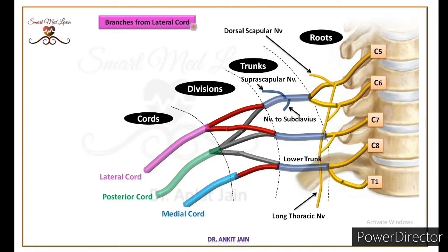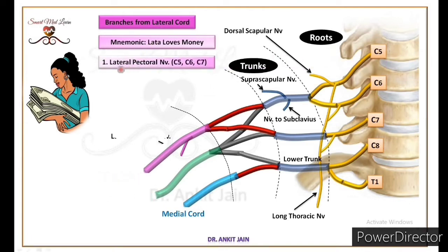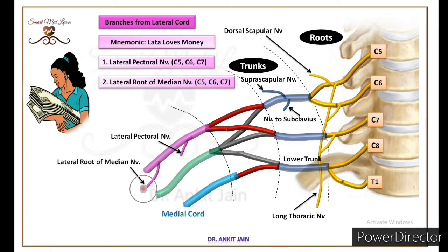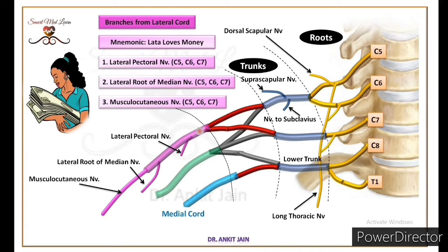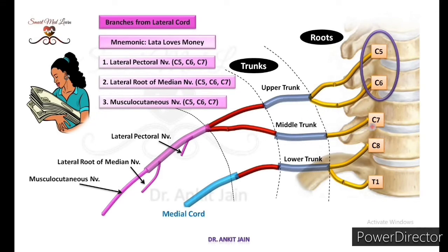Now we discuss the branches from the lateral cord. Lateral cord ki branches ko yaad rakhne ke liye hamari trick hai: Lata loves money. Lata ka jo ye L hai, that indicates the lateral pectoral nerve. Second L represents the lateral root of median nerve. And this M represents the musculocutaneous nerve. As we know, lateral cord is formed by the joining of anterior division of upper trunk and middle trunk. Upper trunk C5 and C6 roots ke joining se ban raha hai, aur middle trunk C7 root ka hi continuation hai. That means lateral cord receives signals from C5, C6 and C7 nerve roots. Isliye in tino nerves ki root value C5, C6 and C7 hogi.